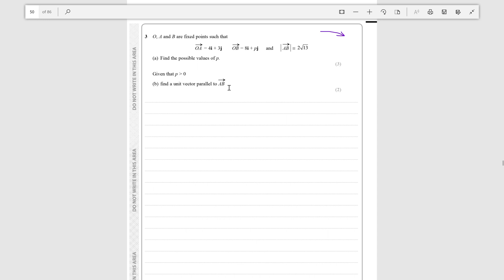We need to find a unit vector parallel to AB. Now a unit vector is a vector with magnitude one, so to find it we just divide the real vector AB by the magnitude so that the magnitude would be one.